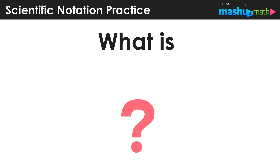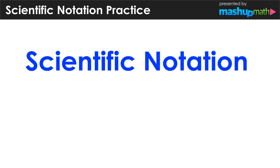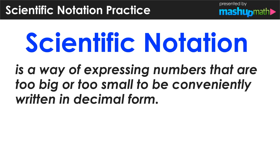Thank you for joining me on this lesson where we are going to explore scientific notation. So let's start with the question: what is scientific notation? Scientific notation is a way of expressing numbers that are either too big or too small to be conveniently written in decimal form.